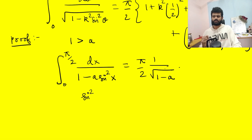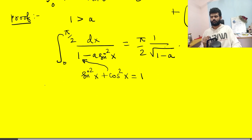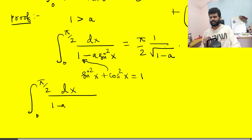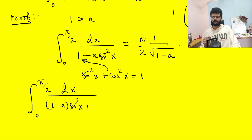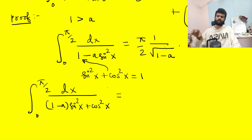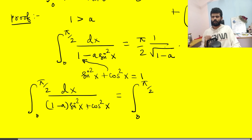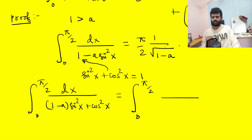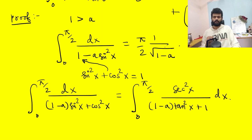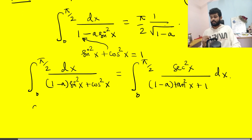To prove this, I'll use the identity sin²x + cos²x = 1. Substituting 1 in the denominator gives the integral from 0 to π/2 of dx divided by (1 − a sin²x + cos²x). After some algebra, I divide numerator and denominator by cos²x, giving sec²x in the numerator and (1 − a tan²x + 1) in the denominator.